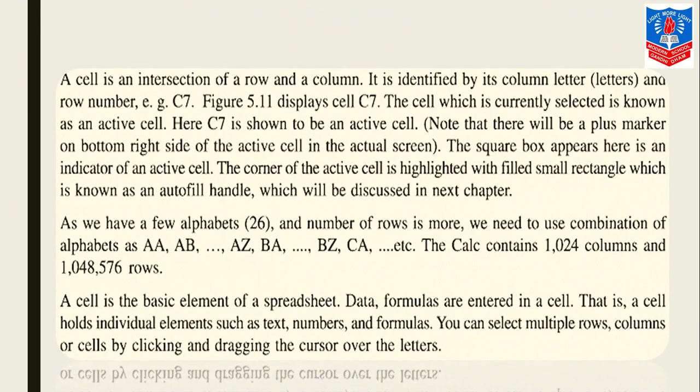A cell is an intersection of a row and column. It is identified by its column letters and row number, like C7. As we have seen in figure 5.11, it displays cell C7. The cell which is currently selected is known as an active cell. This cell which is shown is an active cell. The square box appears here as an indicator of an active cell. The corner of the active cell is highlighted with a filled small rectangle which is known as an auto-fill handle, which will be discussed in the next chapter.